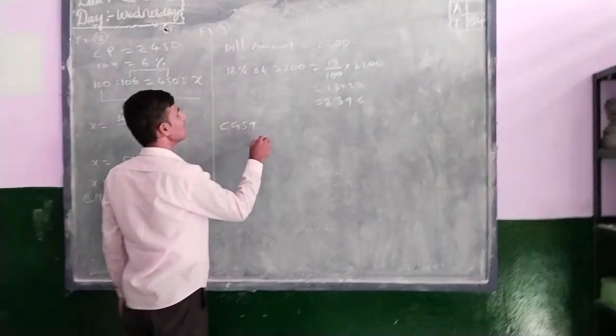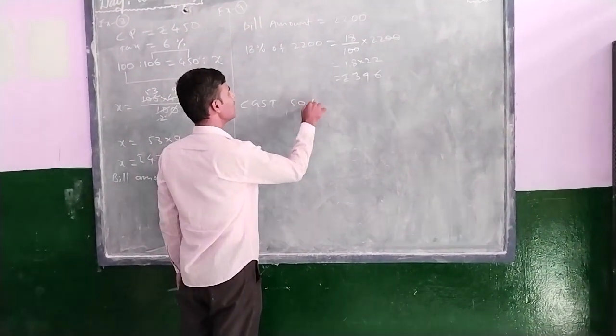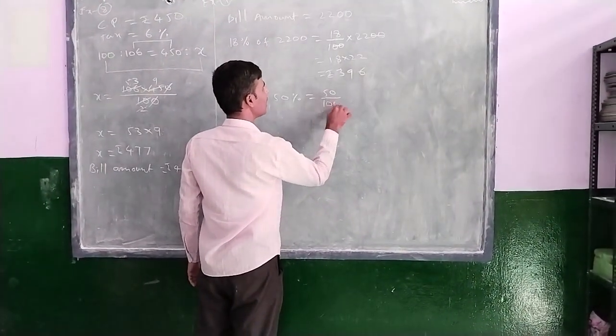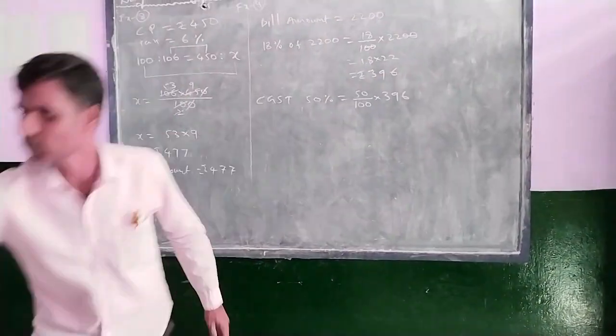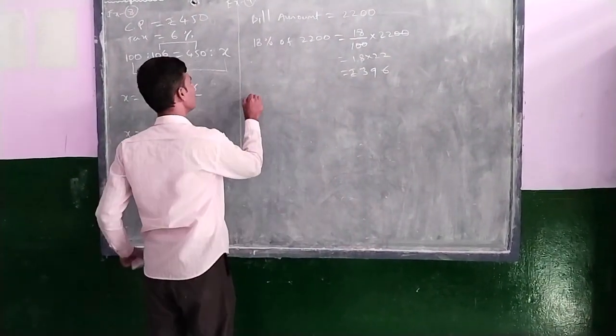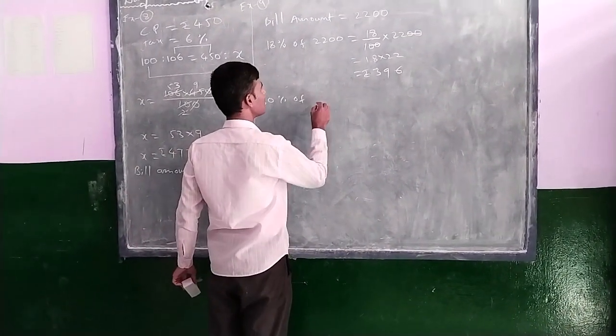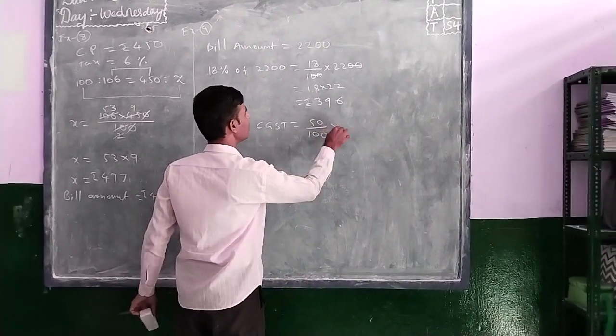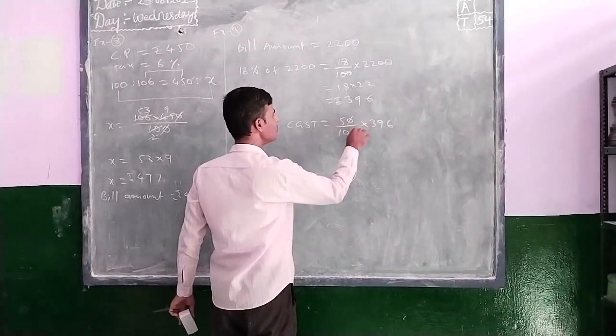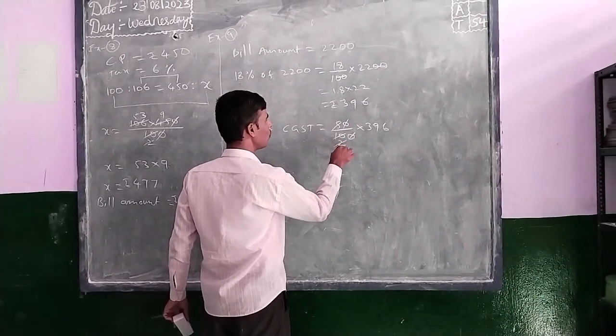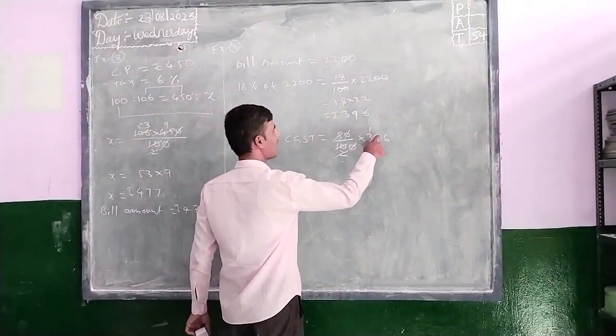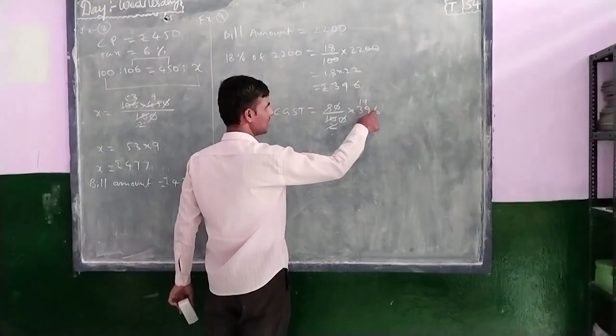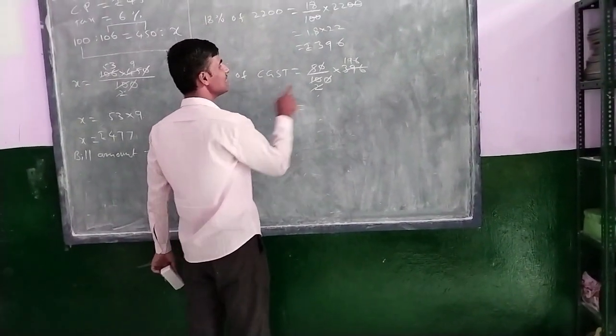CGST equals how much? 50%, so 50% means 50 divided by 100 into 396. 50% of CGST equal to 50 by 100 into 396. We can cancel: 1, 2, 2. So here 198 is there. 9 minus 8 is 1, 16, 2, 8, 16. So 50% CGST is 198.